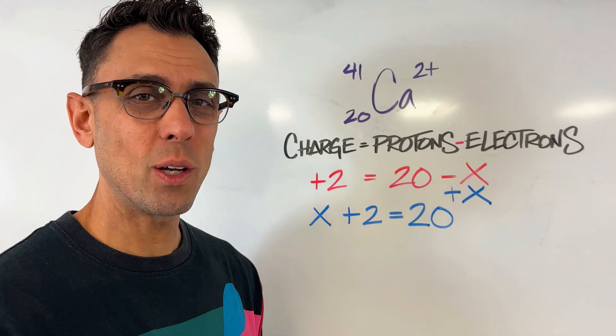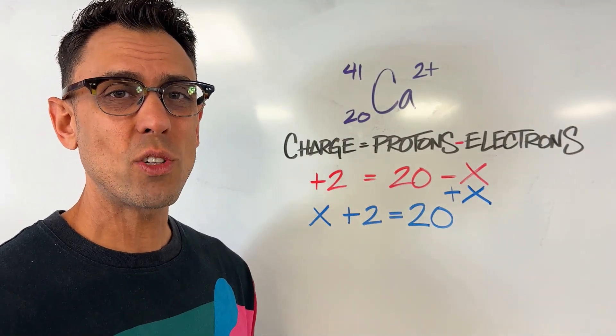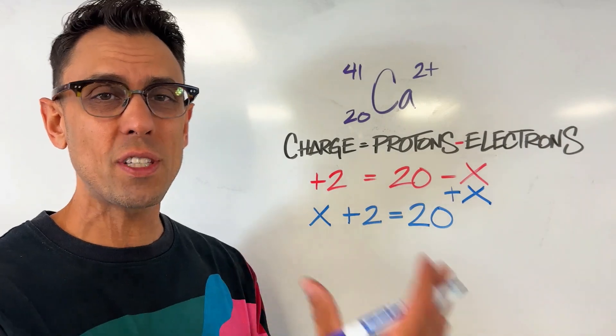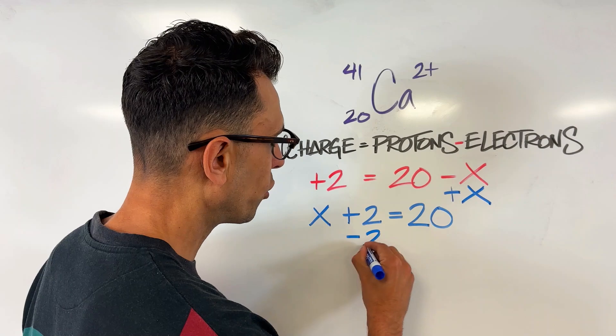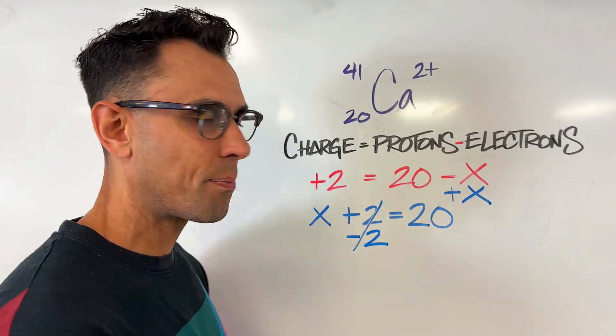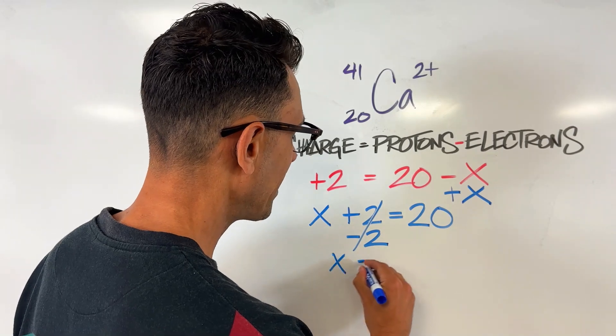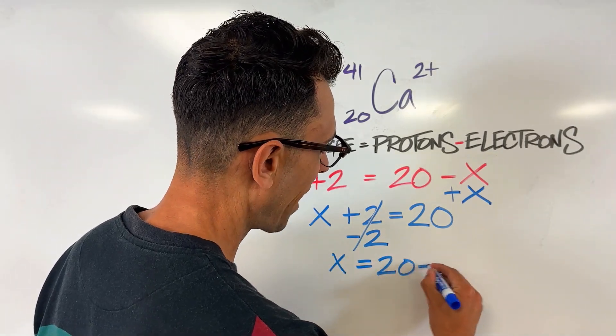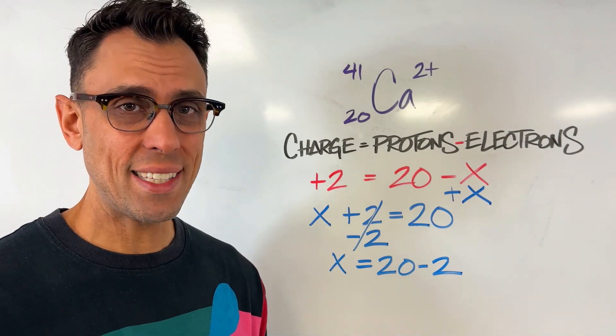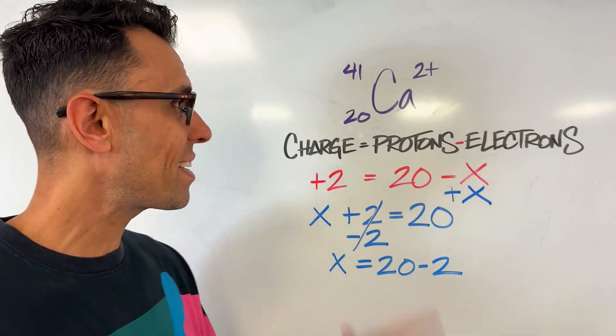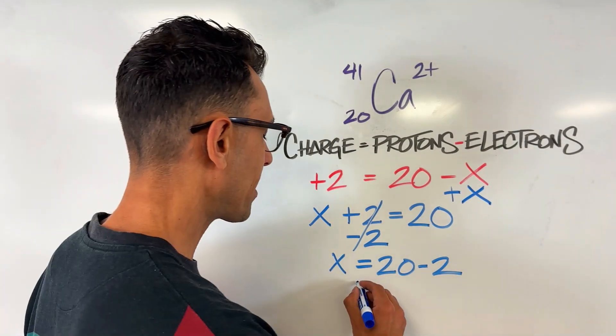x plus 2 equals 20. But I need to get all of the numbers on the right side of the equation so I know what x by itself is equal to. So let's use the opposite operation. I'm going to subtract 2 from this side, eliminating it. And then I'm going to subtract 2 from the other side as well, which will give me x is equal to 20 minus 2. Okay, now 20 minus 2 is 18. So in this example again, we see that this particular atom has 18 electrons. x is equal to 18.